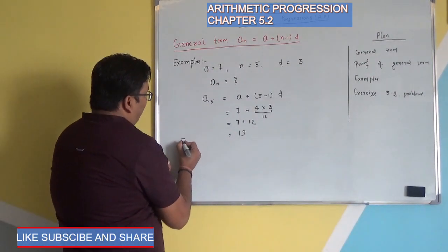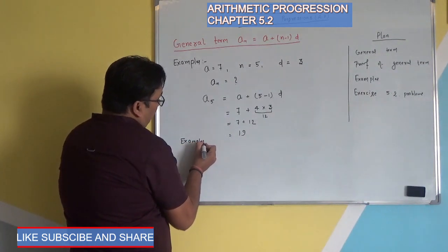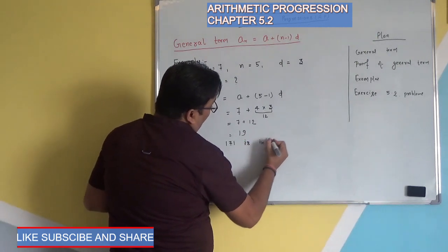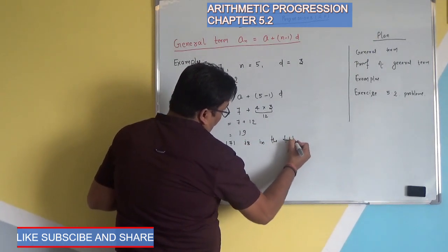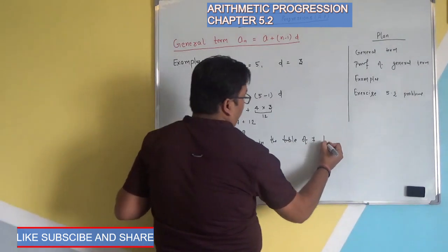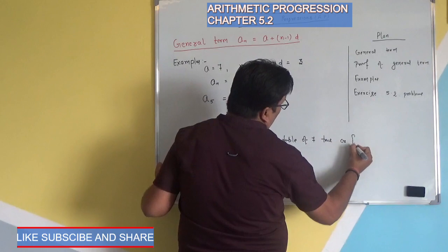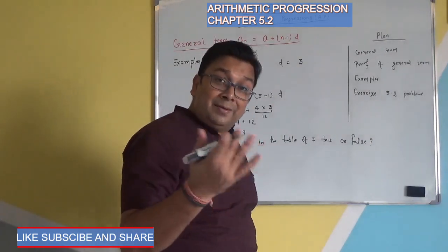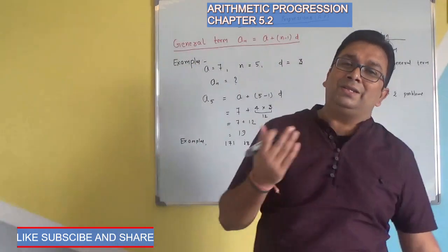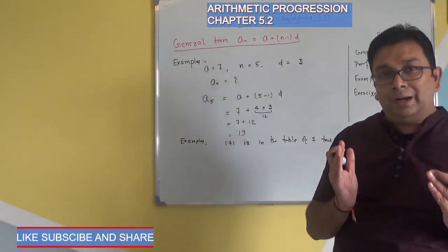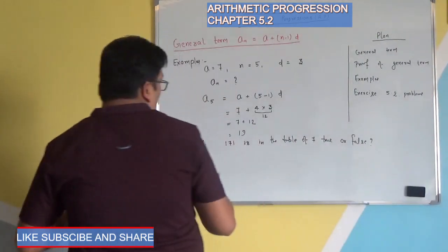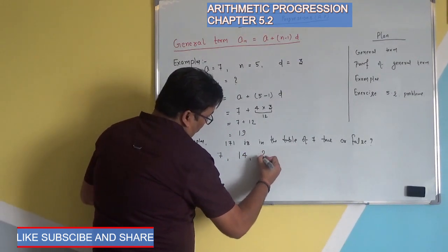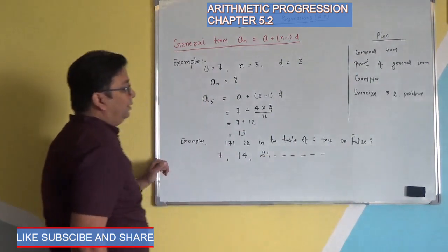We can also check whether 171 is in the table of 7, true or false. You need to check whether 177 — basically we want to see whether 171 is divisible by 7. To check this, look at the table of 7: 7, 14, 21, and so on.